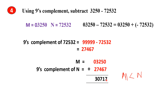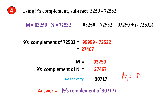What you should do next is find the 9's complement of this number. Since there is no end carry, you have to put a minus sign in front of the answer because M is less than N. So you have to put a minus in front of the answer and then find the 9's complement of this number. The 9's complement of the number is this.